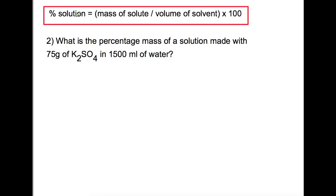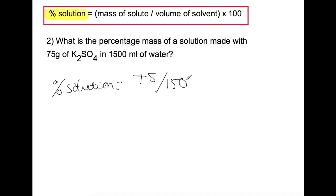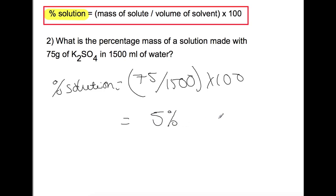In the second question, we are trying to find the percentage solution. Writing out our equation: percentage solution equals the mass from the question, which is 75, divided by the volume of solvent, which is 1500, times by 100. This gives a percentage solution of 5%.